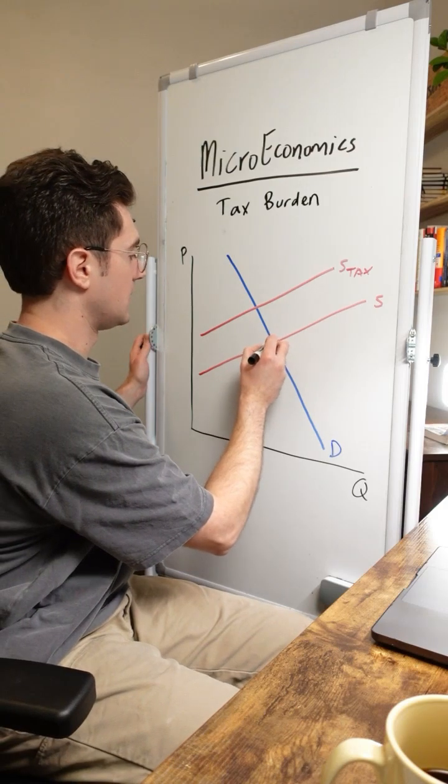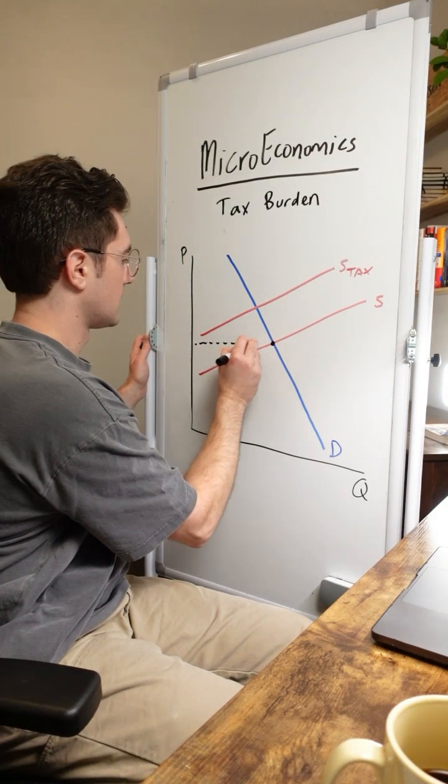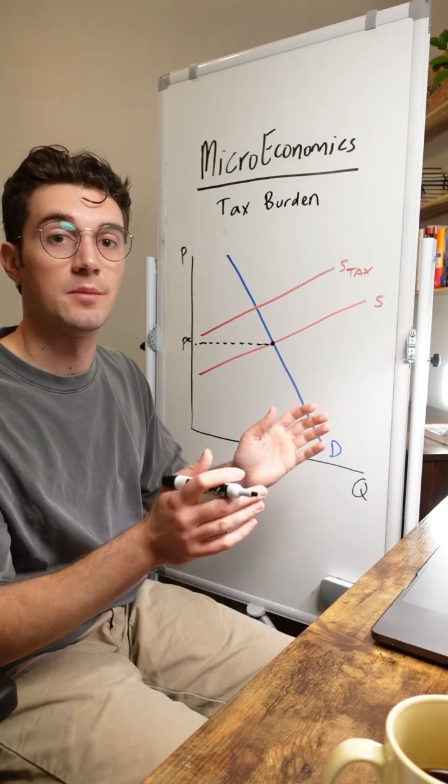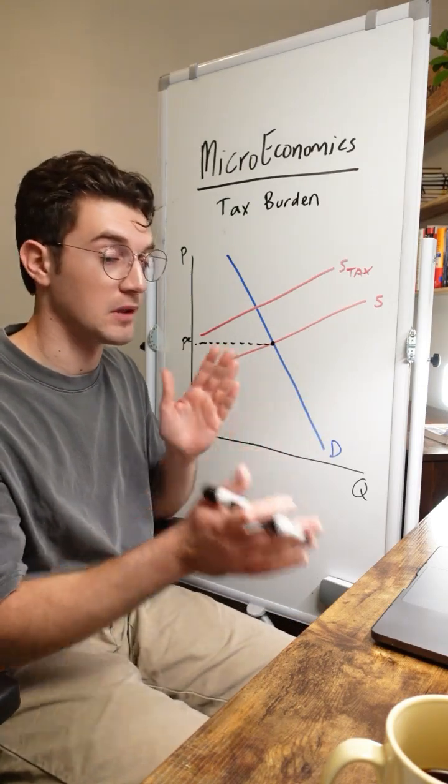That's going to be the intersection of the original supply and demand curves. So we'll call this P star. This is the price that before the tax was implemented, this market operated at between consumers and producers.